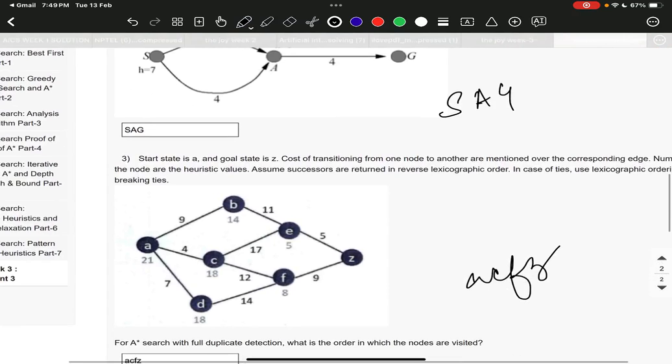equals to zero, f(n) represents UCS. Question number two, the right answer is option SAG. Question number three, the answer would be A, C, F, Z. Question number four, it is option A, h plus one.